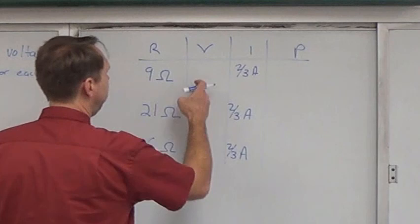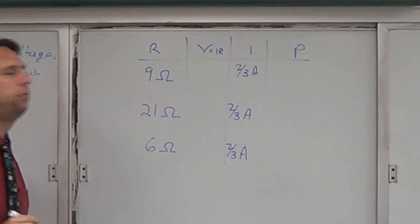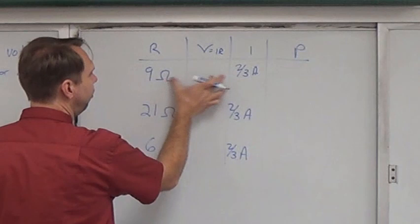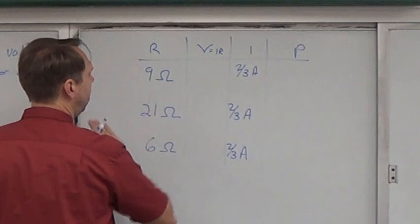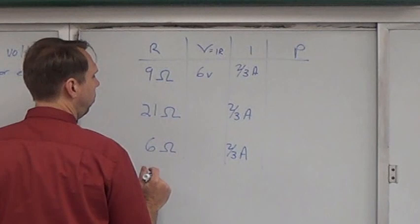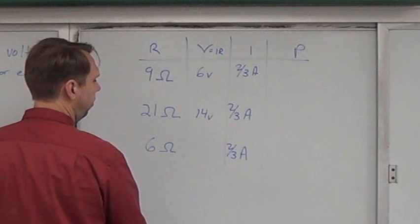Now I can look at voltage. To get voltage, voltage equals I times R. We'll manipulate Ohm's law, V equals IR. And we're going to apply it individually to this resistor. So V here is equal to I times R. Well, what's 2 thirds of 9? That's 6 volts. What's 2 thirds of 21? That's going to be 14 volts. What's 2 thirds of 6? That's going to be 4 volts.